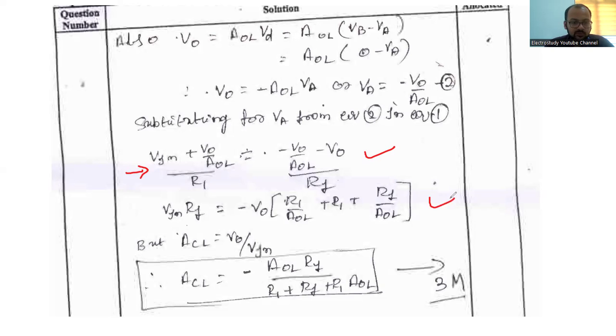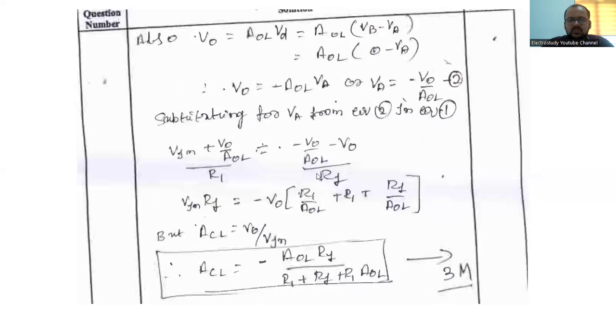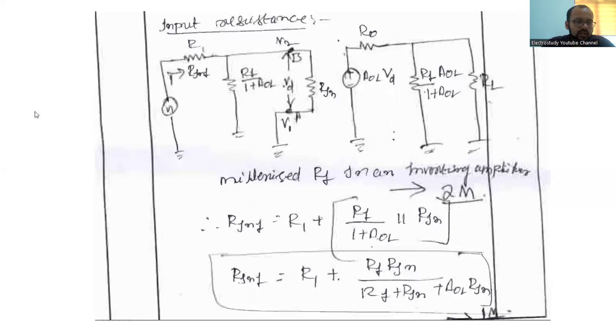After substitution, you will be able to get these particular equations. Do the further simplification. Ultimately, ACL, that is actually minus AOL into RF divided by R1 plus RF plus R1 into AOL. You will be getting like three marks. Each step, they are providing the marks. Follow accordingly. Don't miss even single steps. Till here, you will be getting ACL.